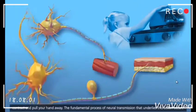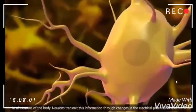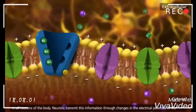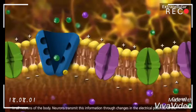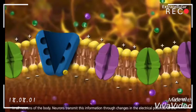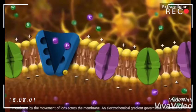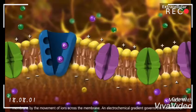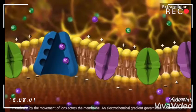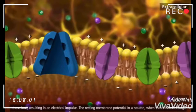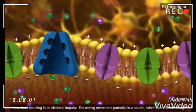The fundamental process of neural transmission that analyzes this action occurs in all neurons of the body. Neurons transmit this information through changes in the electrical potential of the membrane by the movement of ions across the membrane. An electrochemical gradient governs the movement of these ions, resulting in an electrical impulse.